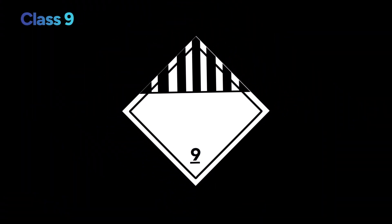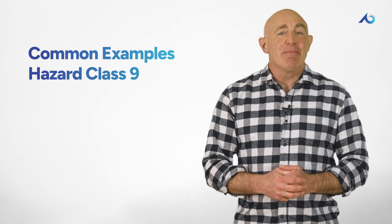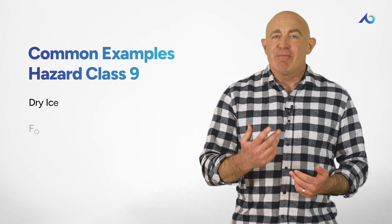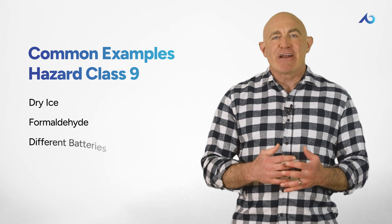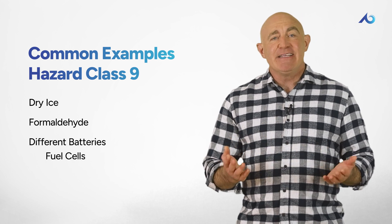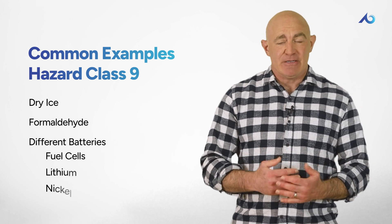Class 9 includes all other hazardous materials that don't fit into the other eight classes. These materials may be an environmental hazard or marine pollutant. Some common examples of hazard class nine include dry ice, formaldehyde, and different types of batteries including fuel cells, lithium, and nickel.